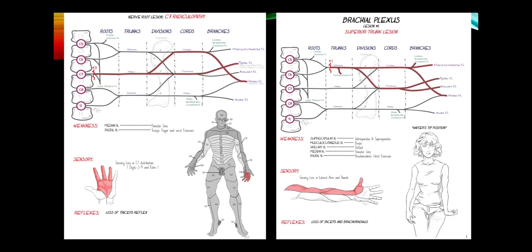The most common cervical radiculopathy is C7 — the second most common cause of a numb hand. Good muscles to check: from C7 via the posterior cord and radial nerve, the triceps and finger extensors are strong C7 muscles. Via the lateral cord to median nerve, the pronator teres for forearm pronation is also a good C7 muscle. You will lose the triceps reflex.